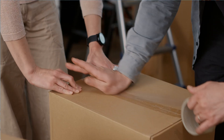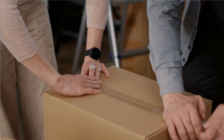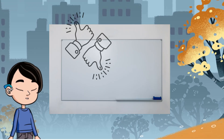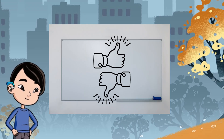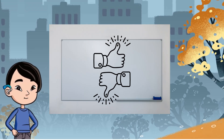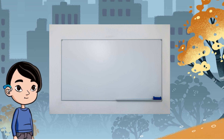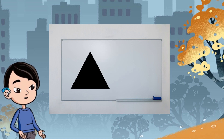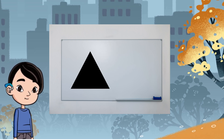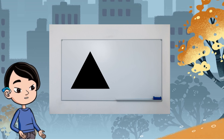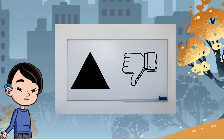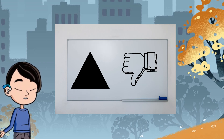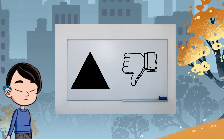Let's play a game. Take a look at the picture shown. If it has volume, give me a thumbs up, and if it does not, a thumbs down. Does a triangle have volume? No, it does not, because it's two-dimensional. Hence, it cannot be filled up.